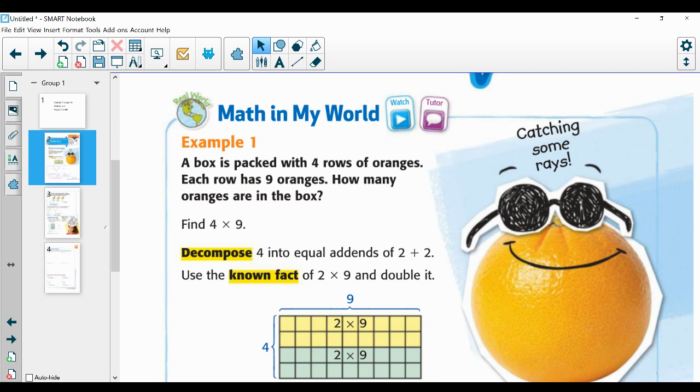Now I'm going to read it with the numbers. A box is packed with four rows of oranges. Each row has nine oranges. Now I see the four rows. I see nine oranges in each row. Every row has nine oranges. Now I'm going to read it with the question to find out what they want me to do with those numbers.